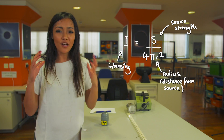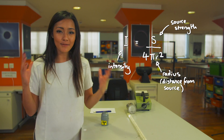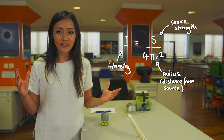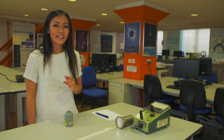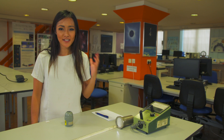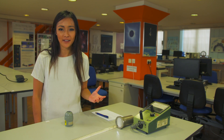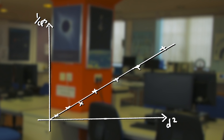Now, since radiation follows the inverse square law, the source can be seen as radiating out as a sphere, and the surface of the sphere expands out as four times pi times distance squared. That means the radiation decreases by an amount proportional to this. If instead we plot distance squared against inverse count rate, we get a straight line. This means that if we quadruple the distance, the time for one detected count doubles, and if the distance is increased by nine, then the time increases by a factor of three.